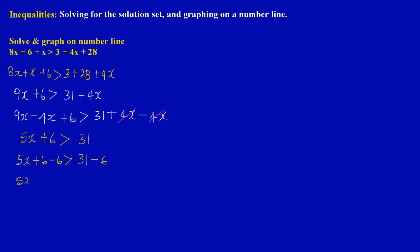So here now, I have 5x. 6 minus 6 will leave us with 0, so that's gone. So we're left with 5x is greater than 31 minus 6, that will leave us with 25.